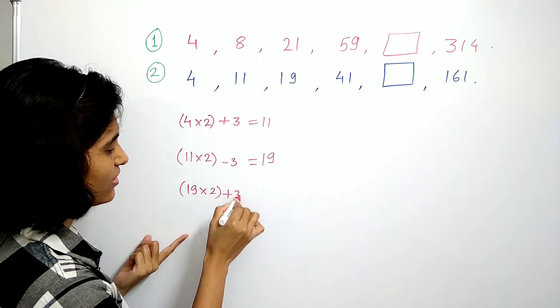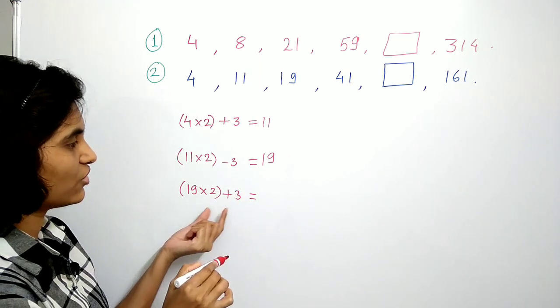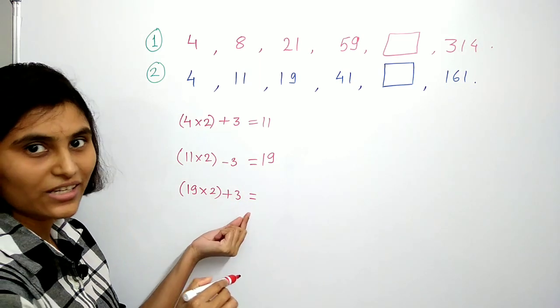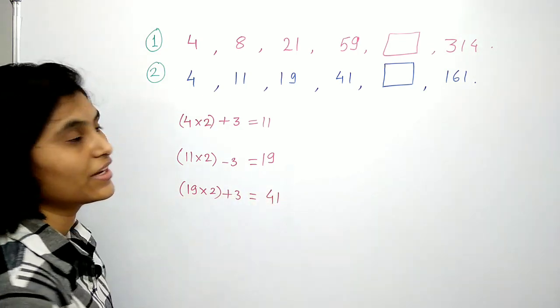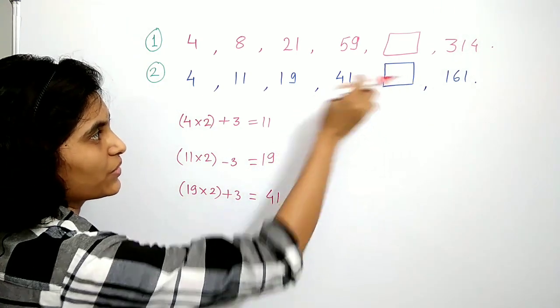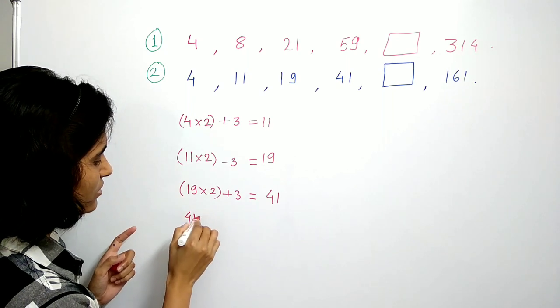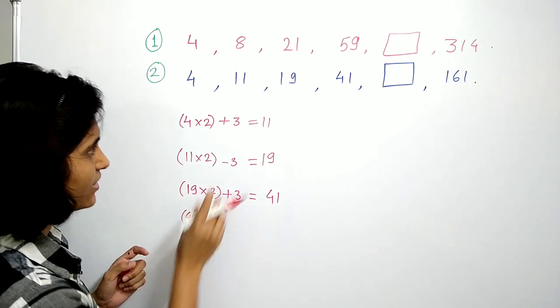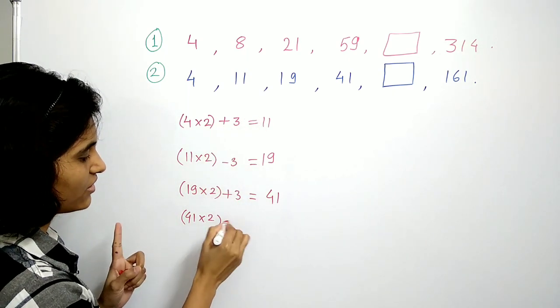This gives us 38 plus 3, which is 41. Now to get this number, we have to take 41 times 2. We have plus 3, minus 3, plus 3, then minus 3, so this gives us 79.